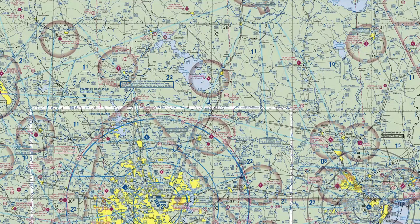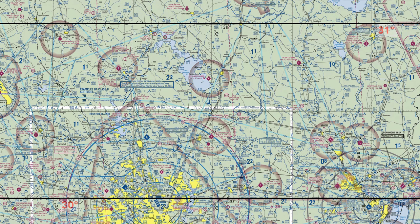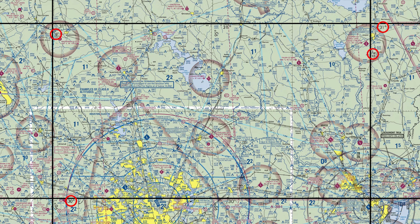Quick review: lines of longitude connect the poles. Lines of latitude encircle the globe parallel to the equator. We can define any specific point on Earth where these lines cross. Let's take a look at the Houston sectional and apply what we just learned. We've zoomed into this area between the latitudes of 30 and 31 degrees north. We're focused on the area between the longitude of 94 degrees and 96 degrees west, because all of the U.S. is in the Western Hemisphere.